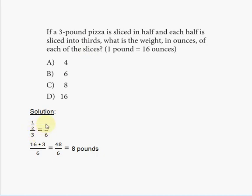We see that the entire pizza is divided into six slices, because ultimately the question is asking you to find the weight in ounces of the smallest slice, which is the resultant slice after you slice the entire pizza in half and then each half is divided into thirds.